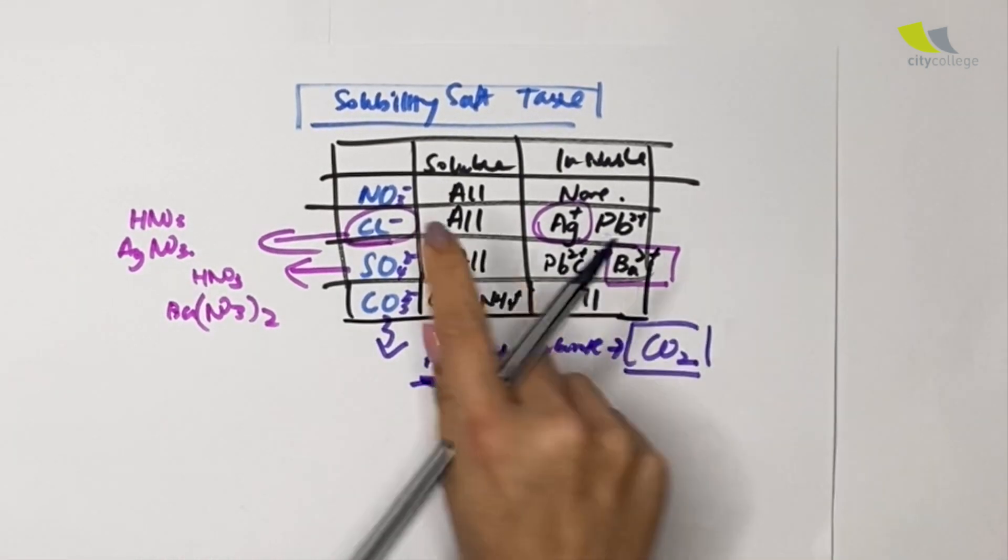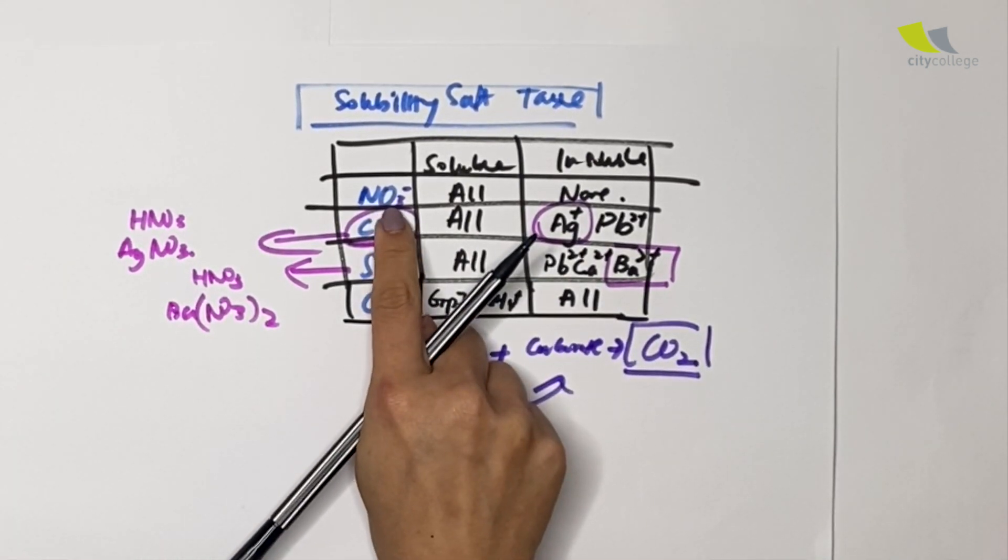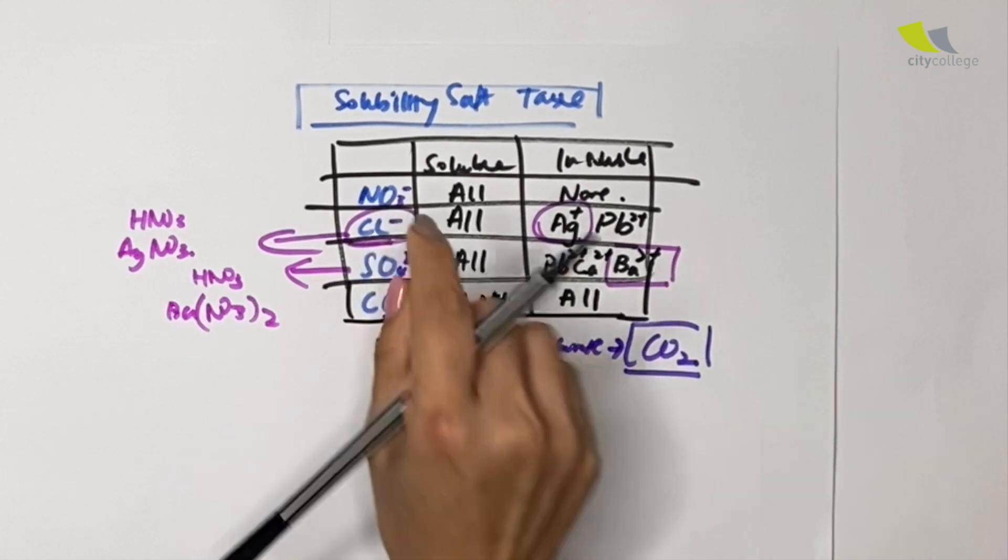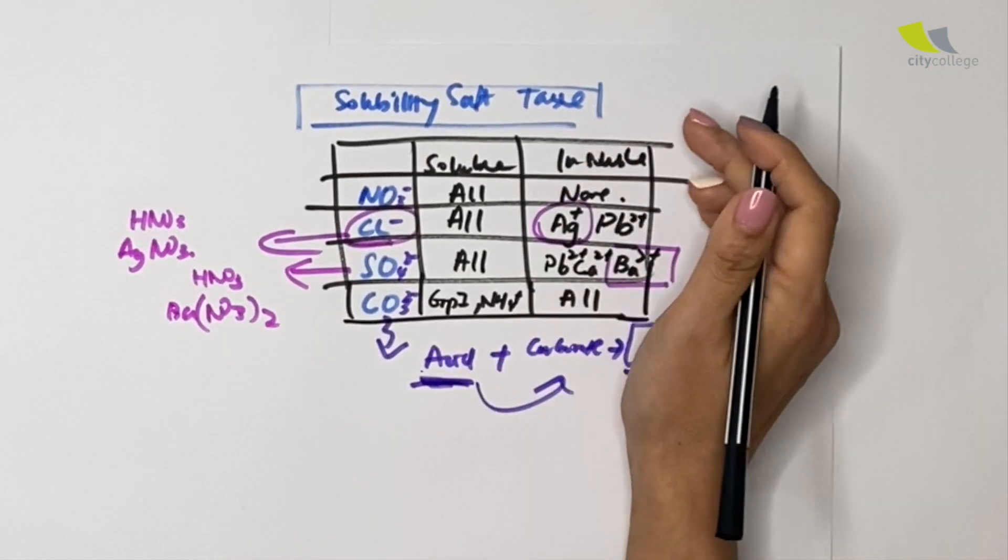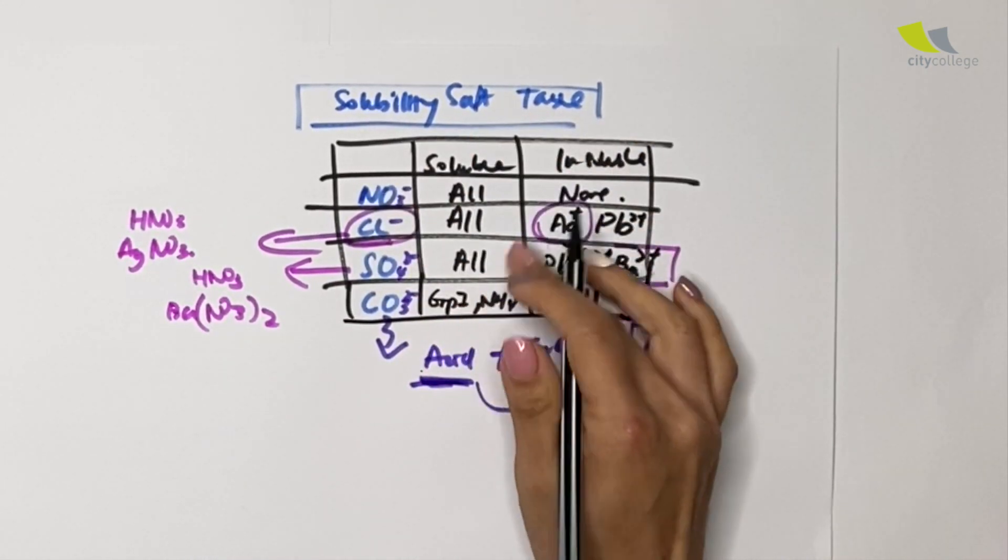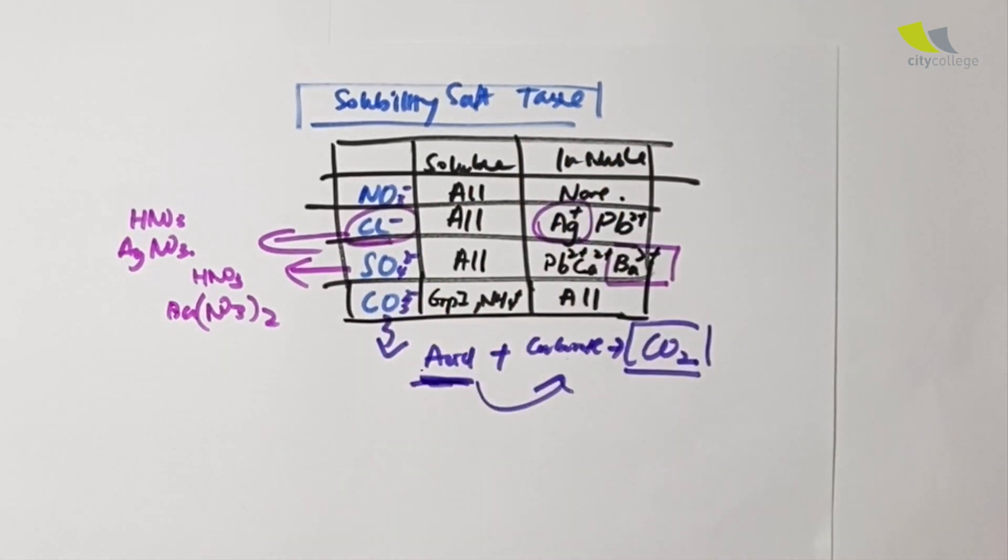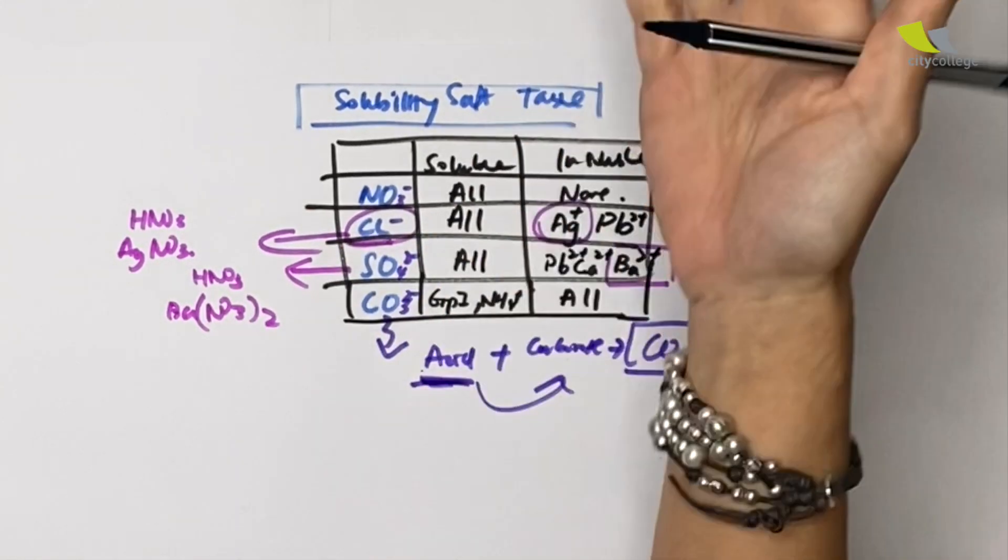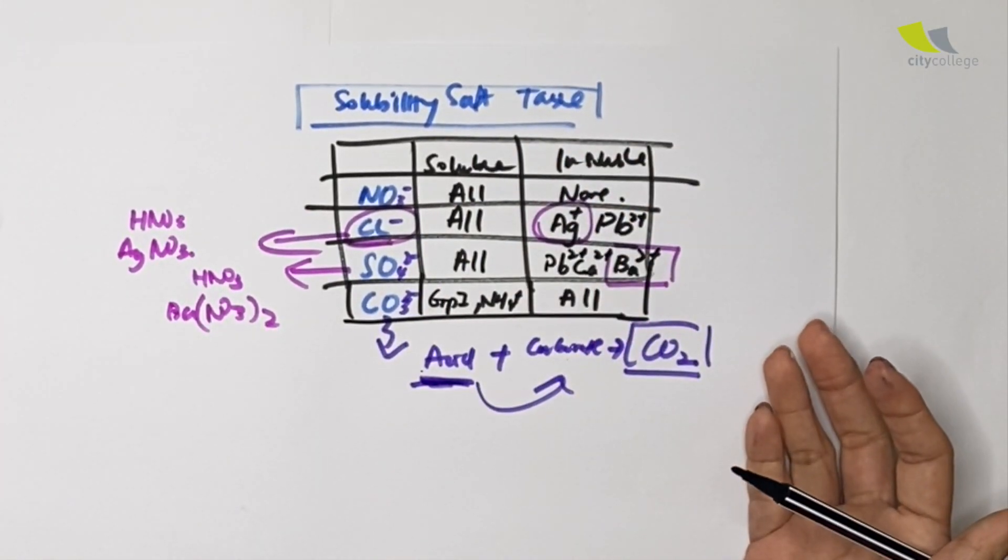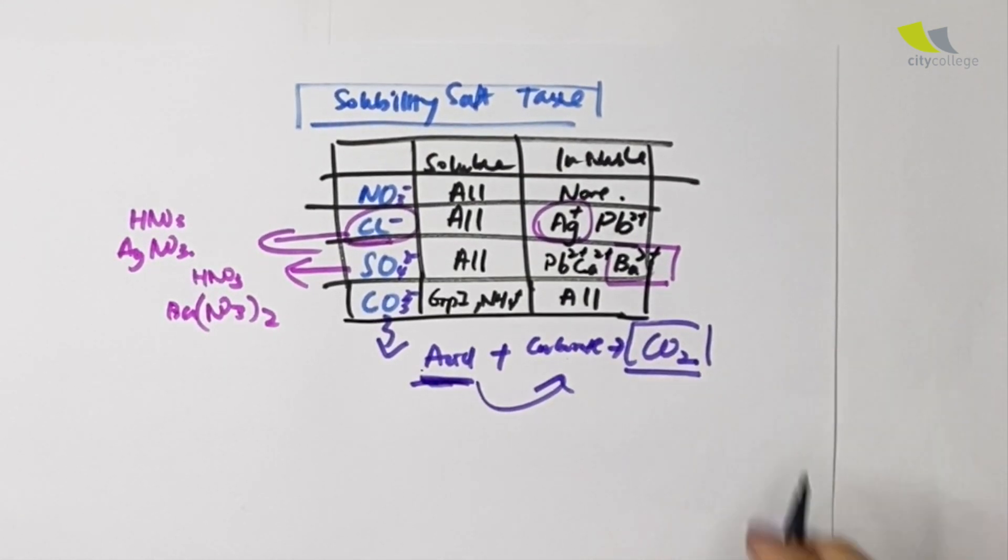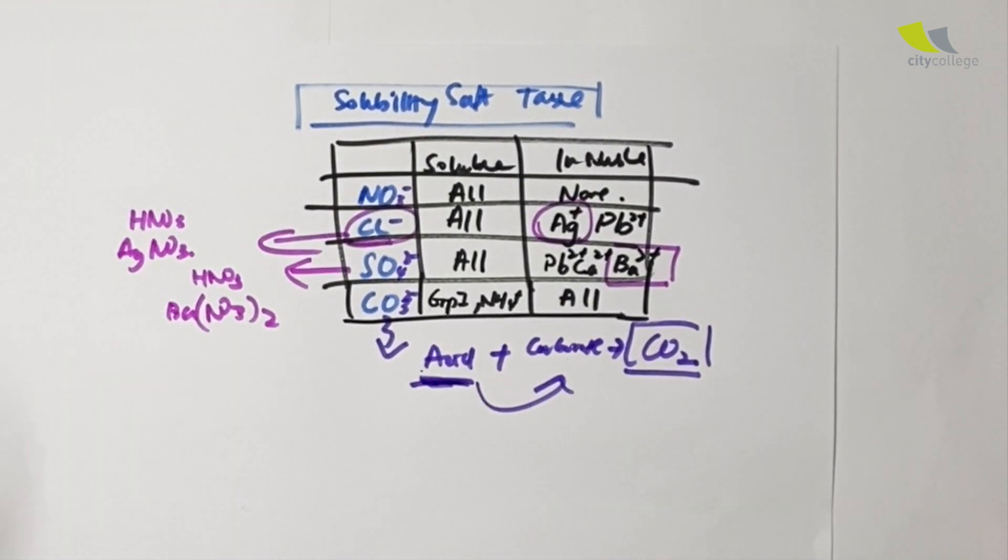Next up, we left with the last one which is nitrate. Of course for nitrate it's a little bit special. You notice that it is the most soluble one. There isn't anything insoluble that I can precipitate out to test for nitrate, so nitrate is a special one.